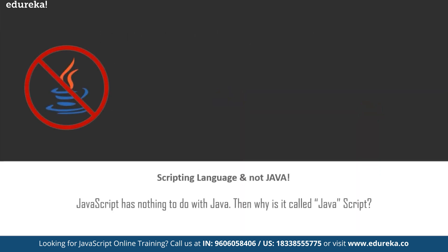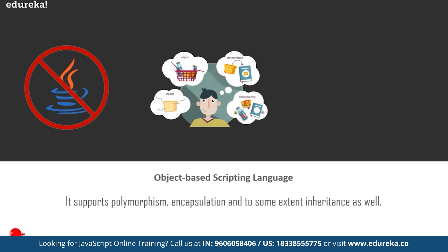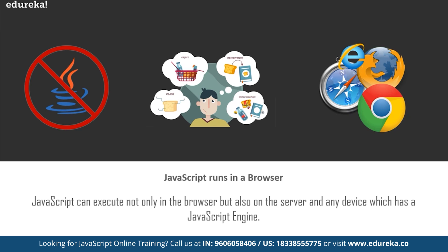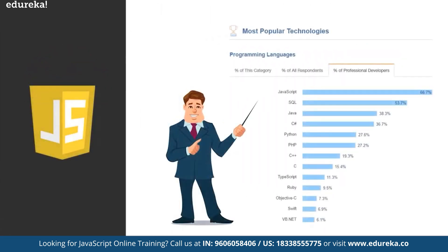JavaScript is a scripting language and not Java — in fact, JavaScript has nothing to do with Java. When JavaScript was first released it was called Mocha, later renamed to LiveScript, and then to JavaScript when Netscape and Sun did a license agreement. It is an object-based scripting language which supports polymorphism, encapsulation, and to some extent inheritance. It doesn't have to be compiled like Java and C, which require a compiler. JavaScript runs in a browser — Google Chrome, Internet Explorer, Safari, etc. — but also on the server and any device which has a JavaScript engine. It has always been on the list of popular programming languages.